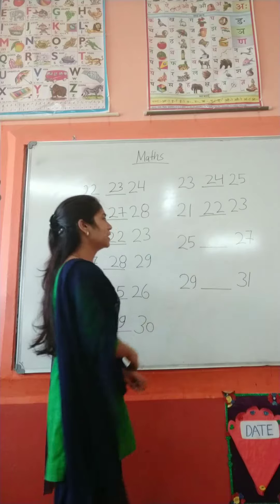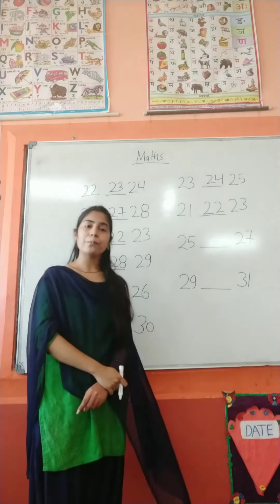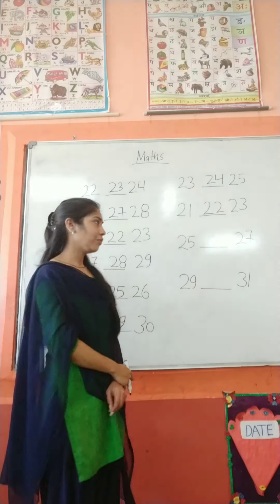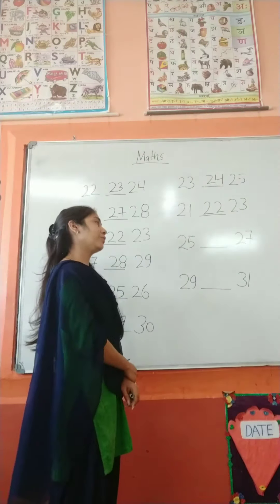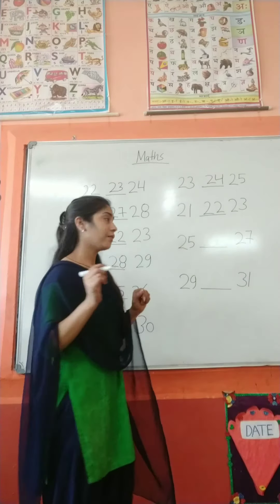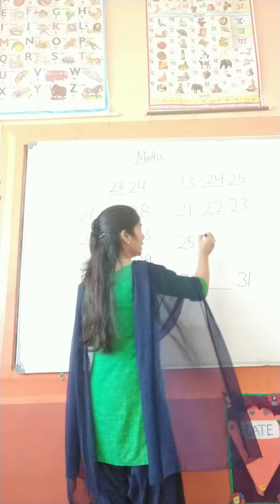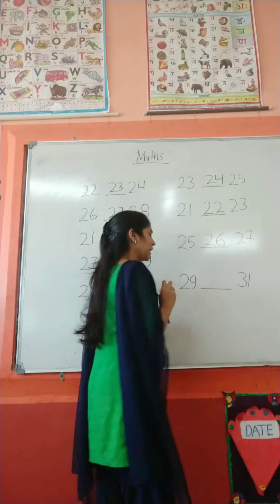Here is number 21. And here is number 21. What number counts between 25 and 27? The answer is 26.